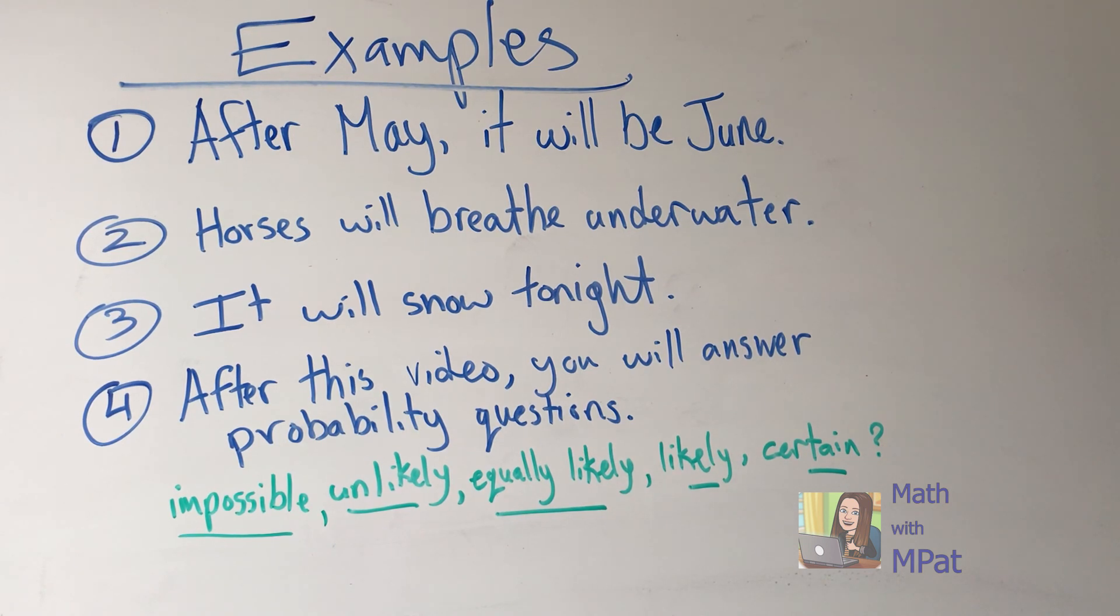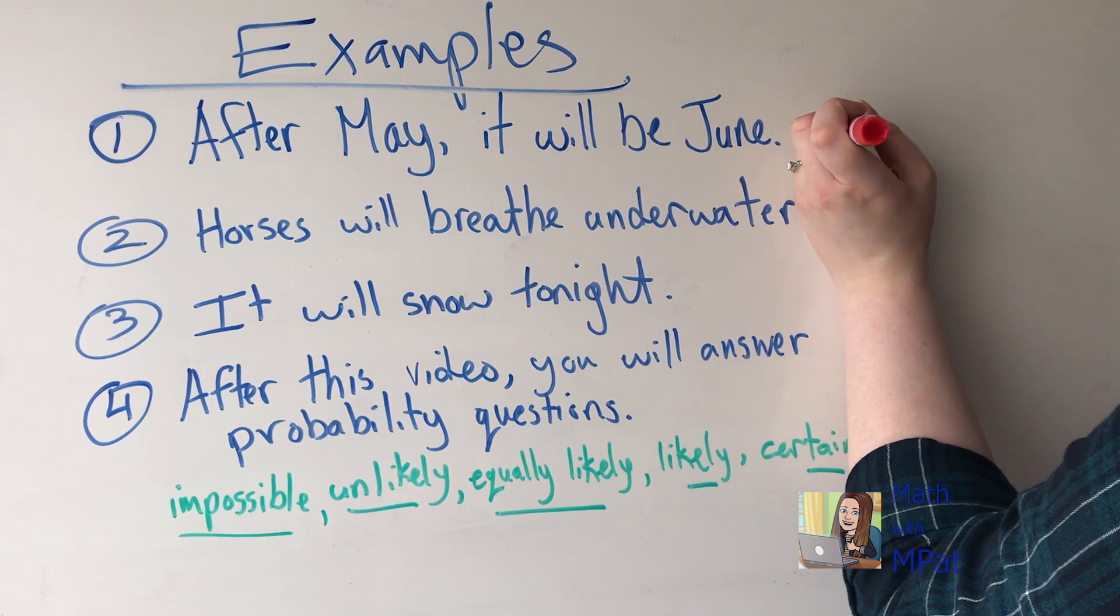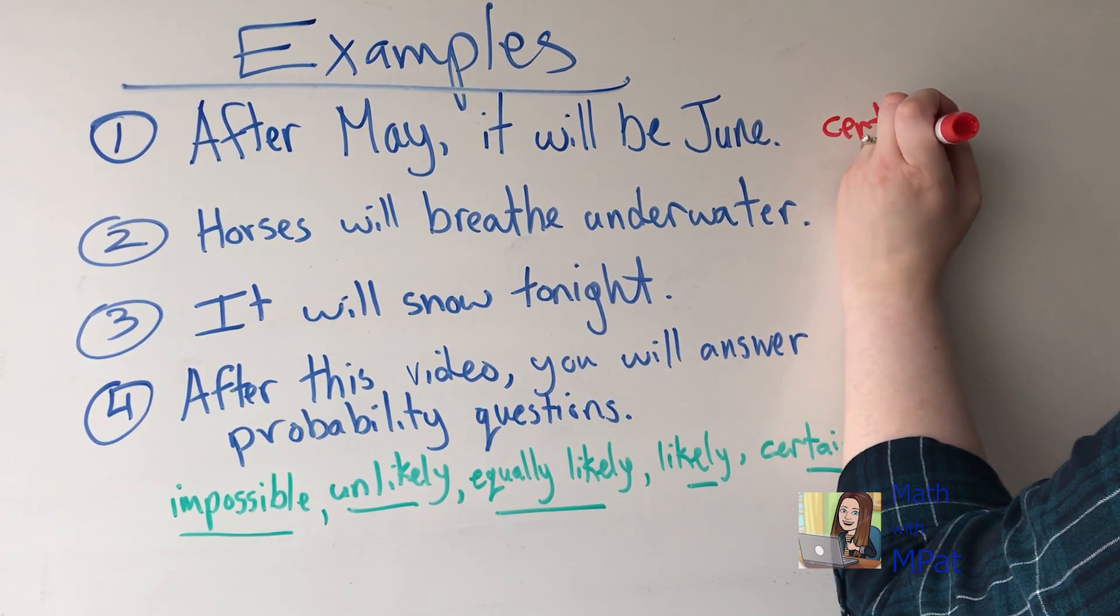Do you think it's impossible, unlikely, equally likely, likely, or certain? Let's count the months. January, February, March, April, May, June. So June happens after May, so it is certain.